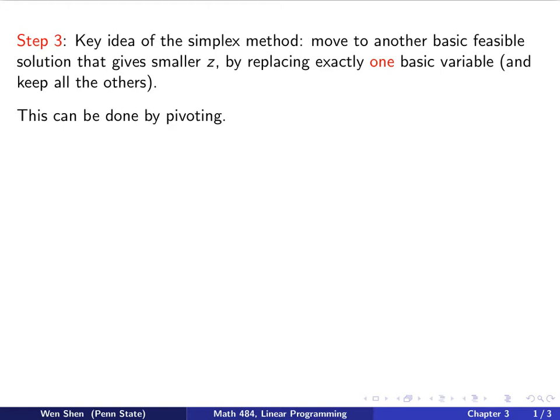Let's explain the key idea of the method. So in a canonical form, you have a basic solution which is feasible and which gives you certain values of z. The key idea of the simplex method is to see that if one can move to another basic feasible solution from the current point, and by doing so, to optimize to have an even smaller z.